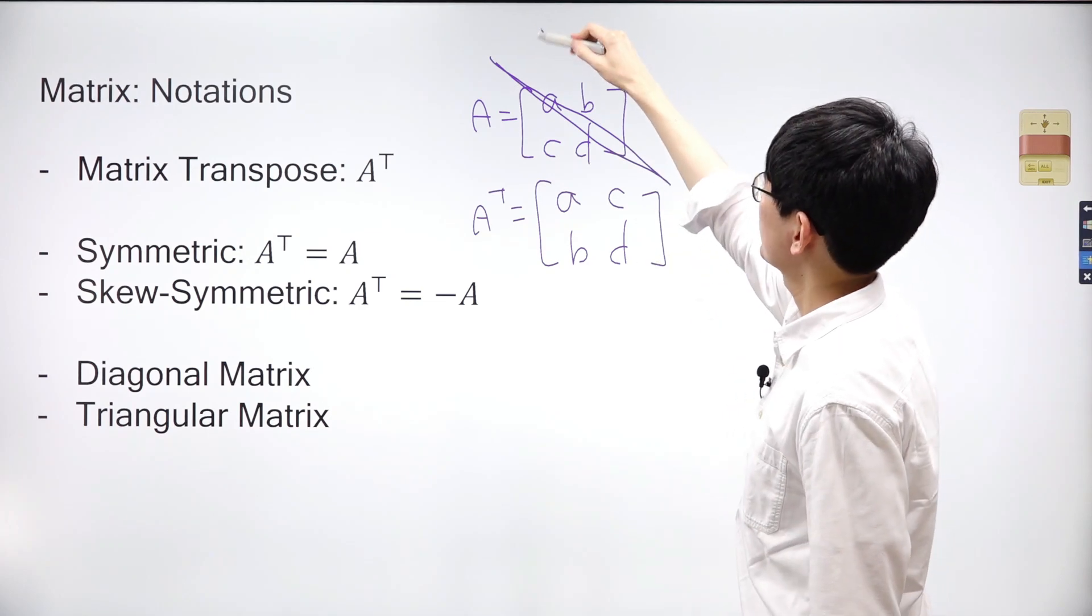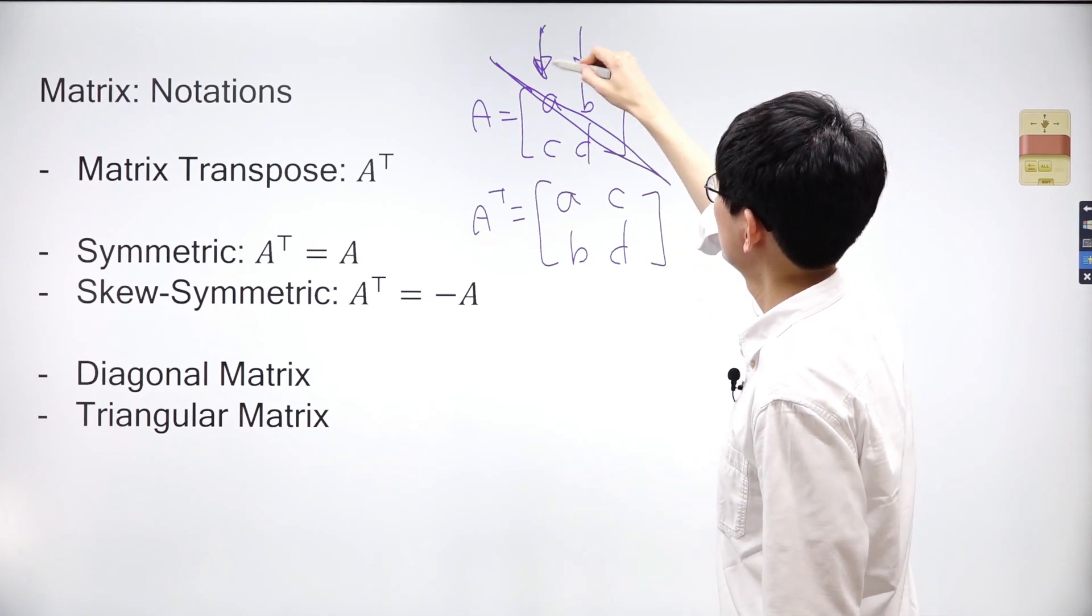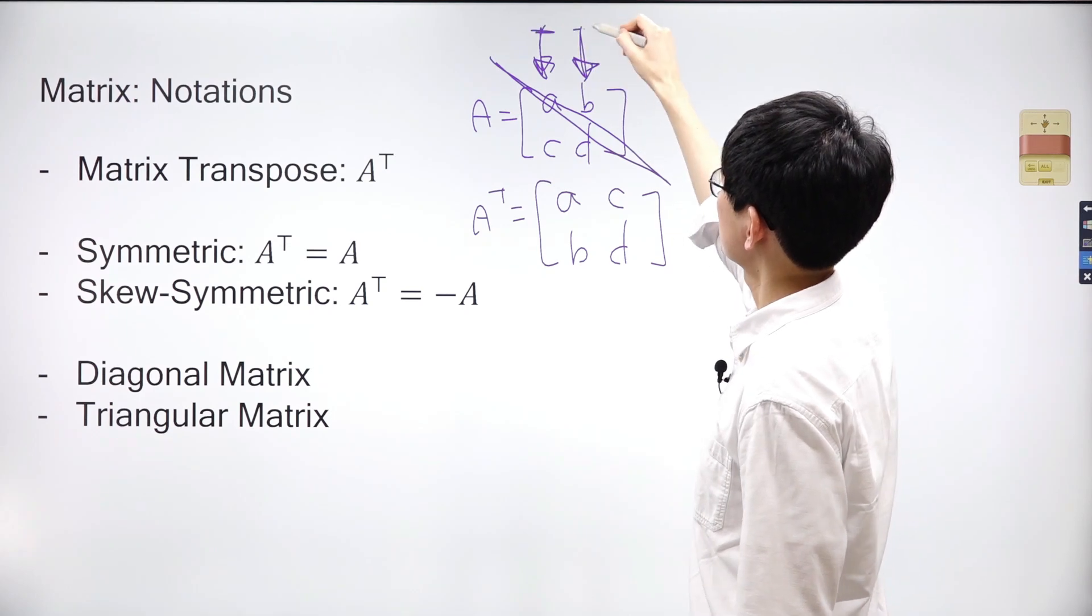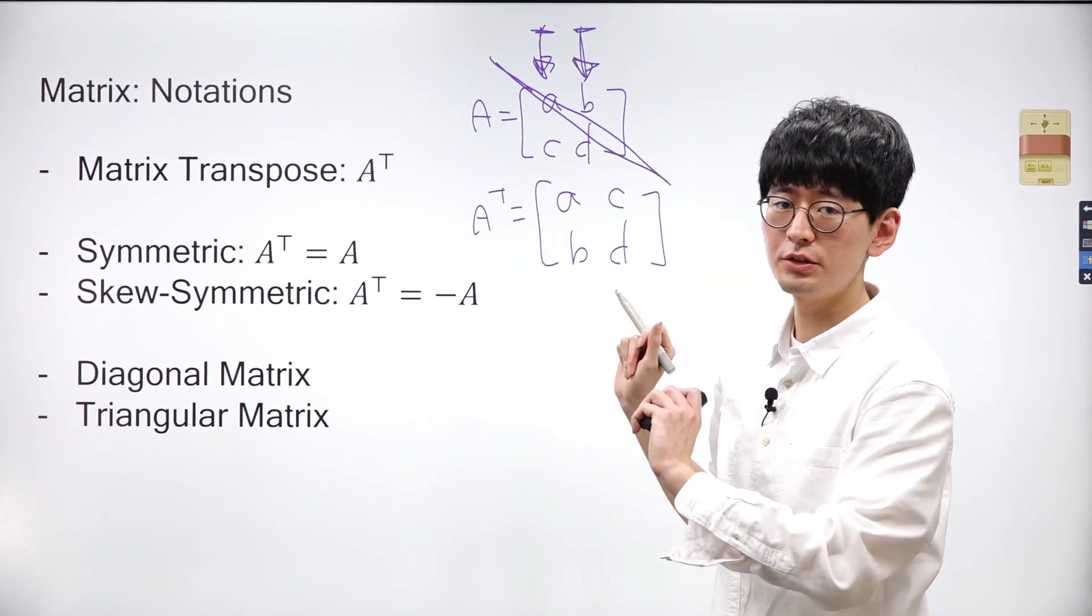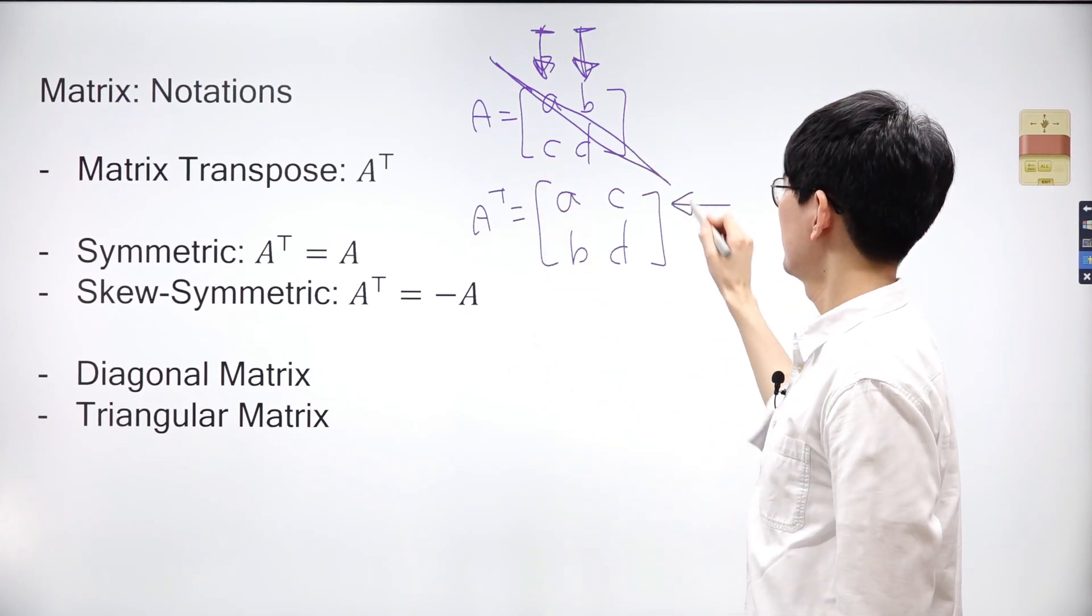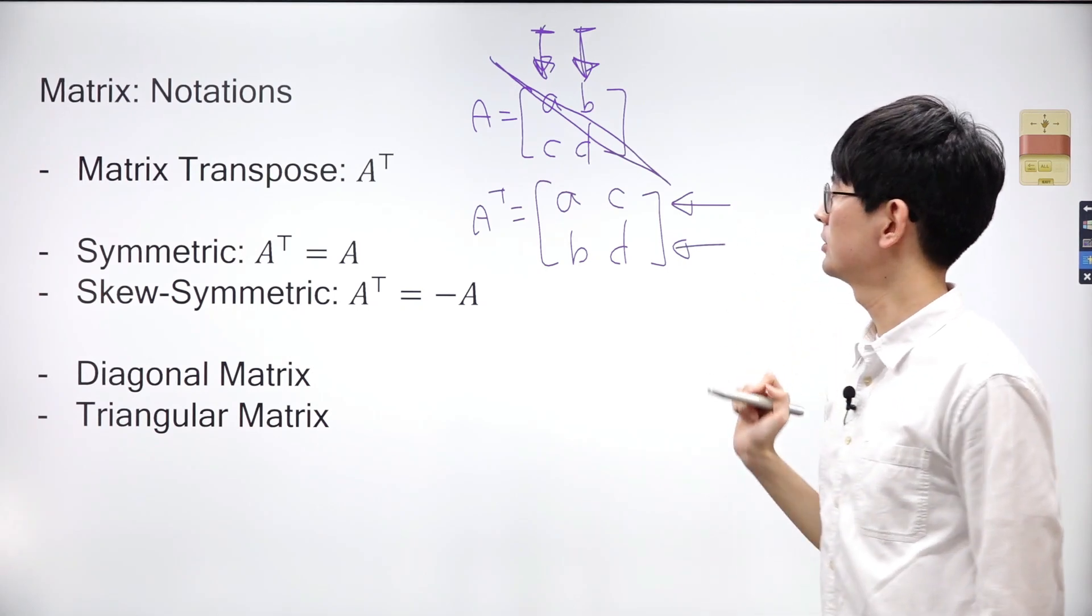Initially, we wrote vectors in the matrix vertically. However, in a transpose matrix, vectors are written horizontally, with each row of the matrix becoming a vector.